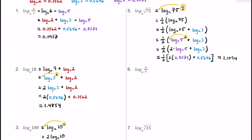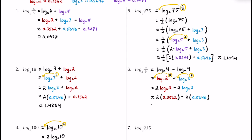For number 6, we have log base a of 4 ninths. Since 4 over 9 is a quotient, we use the quotient property to get a difference of two logarithms. Notice that 4 and 9 are both perfect squares. Rewriting: 4 is 2 squared and 9 is 3 squared. Using the power property, we bring the 2 in front for each logarithm, giving us 2 times log base a of 2 minus 2 times log base a of 3. Substituting the decimal approximations, we get about 1.8416.